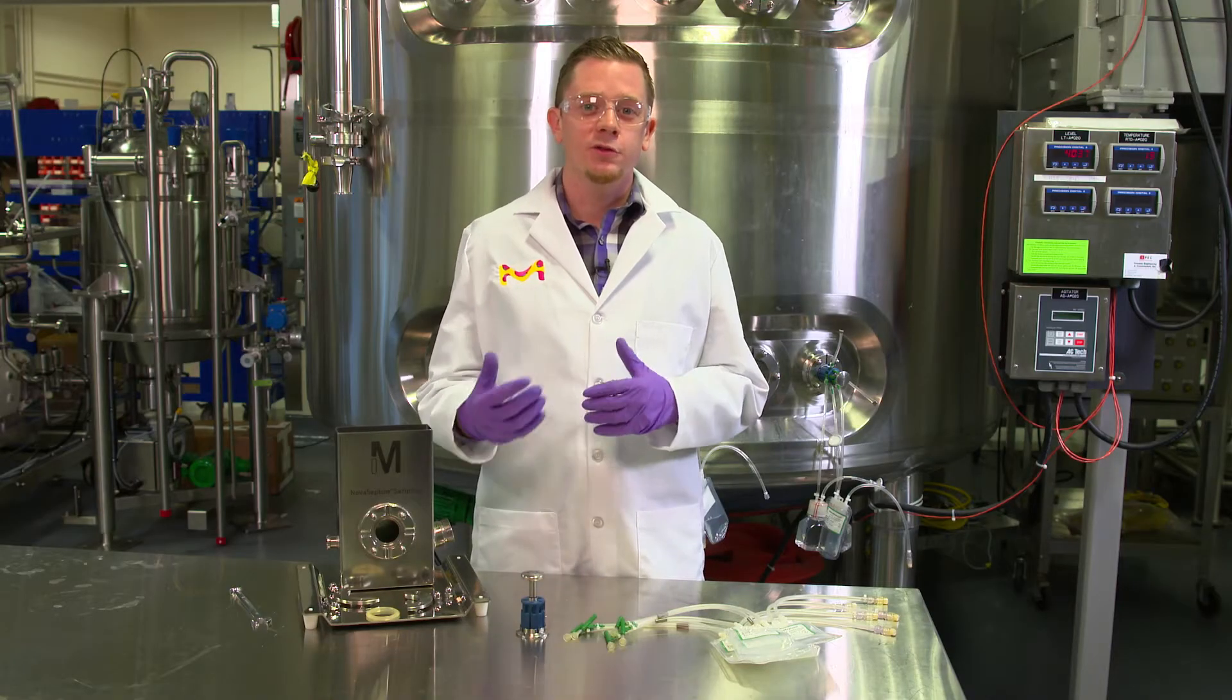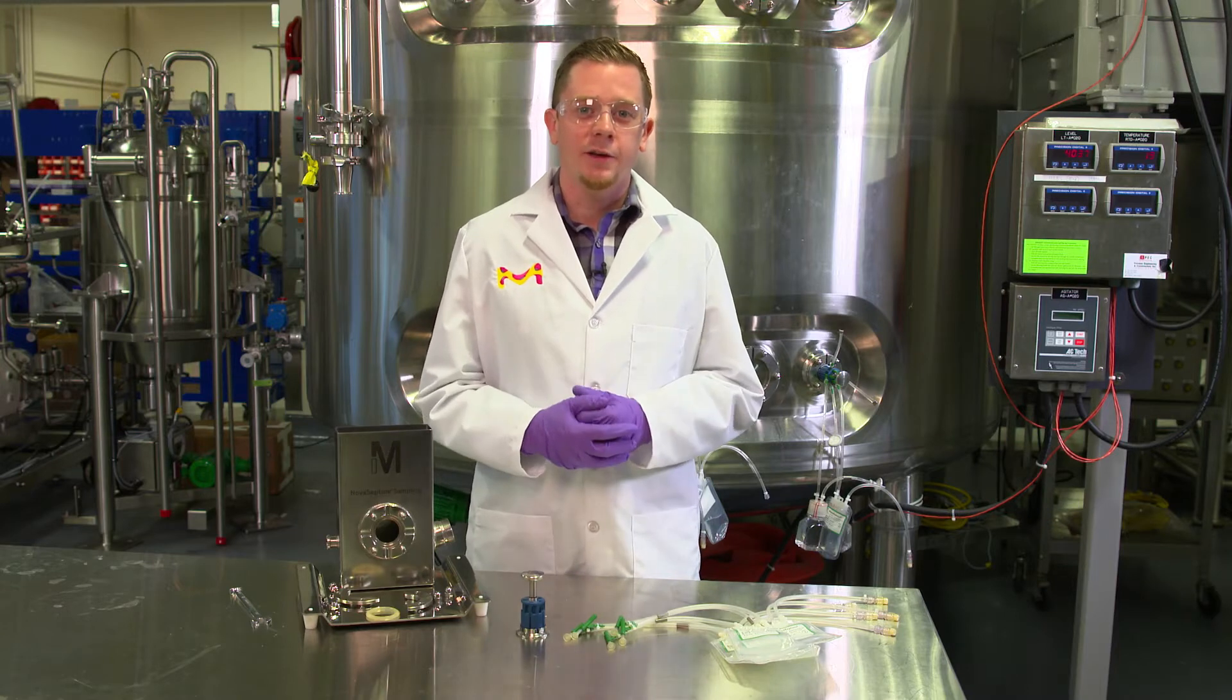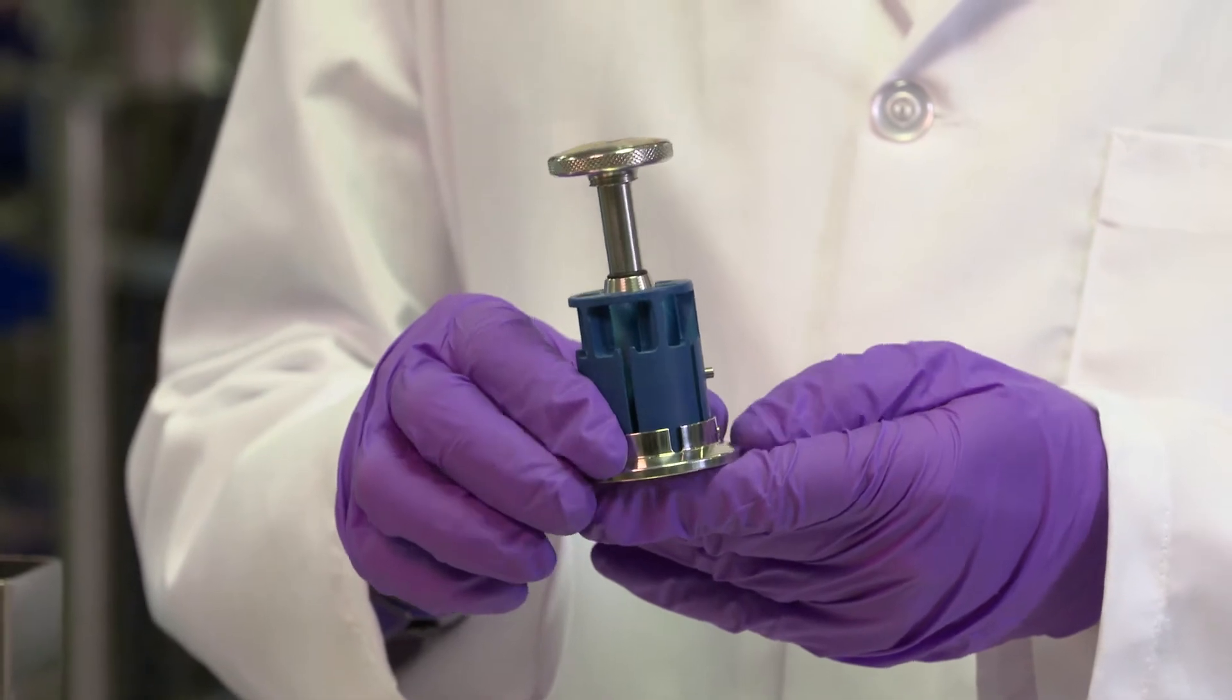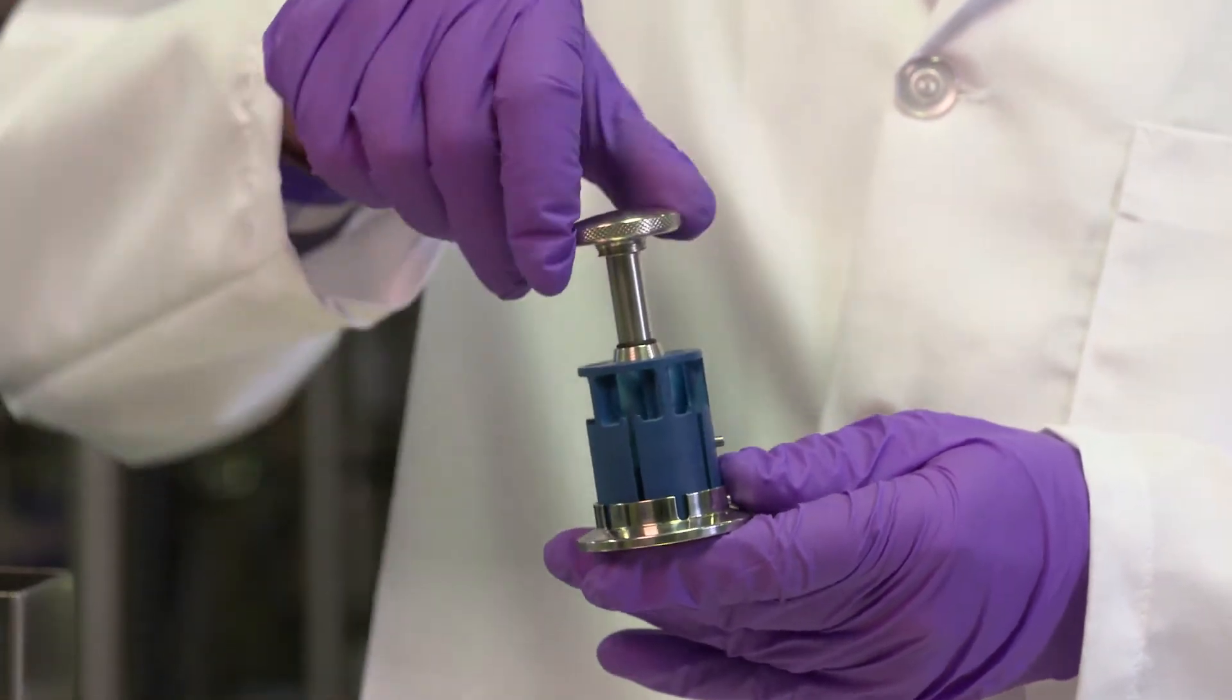So now let me show you how to install a sampling system onto a tank. The first step is to take our holder and disassemble it so that we can install the containers onto it.